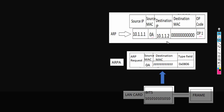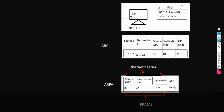ARP protocol will know that 10.1.1.1 whose MAC is 0A has sent the ARP request and is looking for the MAC address of 10.1.1.2. ARP protocol is responsible to update this information in its ARP table dynamically. Now Machine B has updated its ARP table. ARP protocol will then generate the ARP reply, with source IP 10.1.1.2, destination IP 10.1.1.1, source MAC 0B, destination MAC 0A, and opcode 02 because it is an ARP reply.